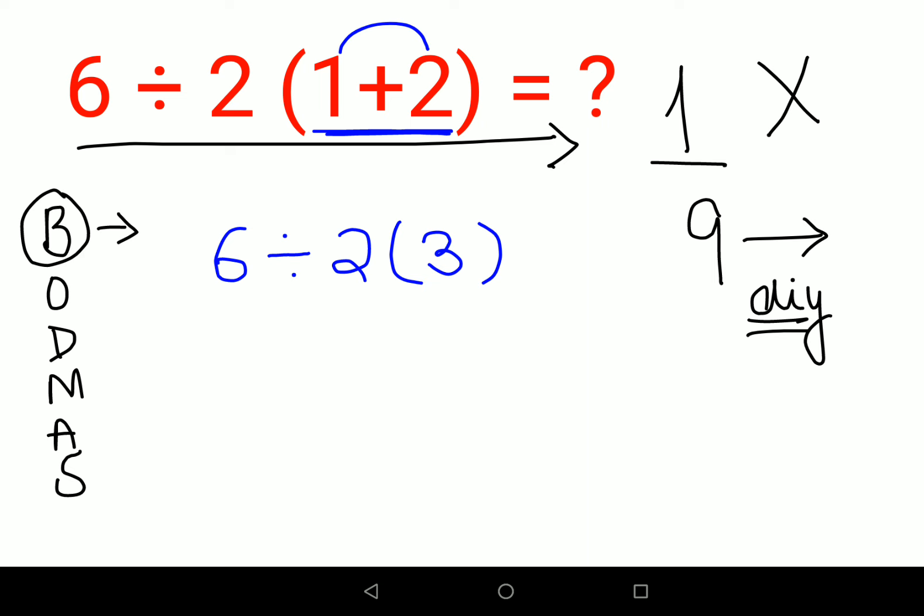Now please understand. If they wanted you to make the answer to be 1, then this entire thing should have been in a bracket. But since the entire thing is not in the bracket, there is no operation to be done here. So if you do the mathematical representation, this looks like this.